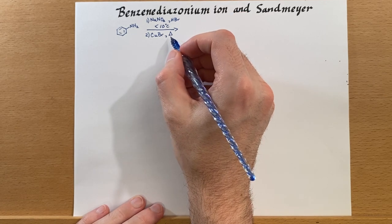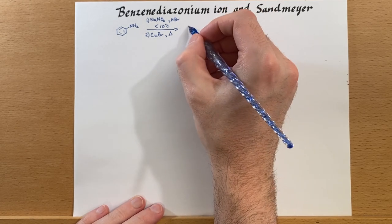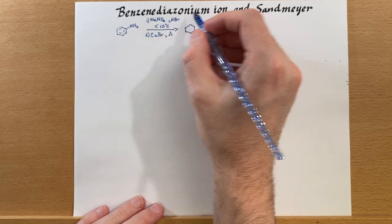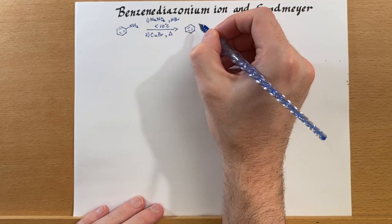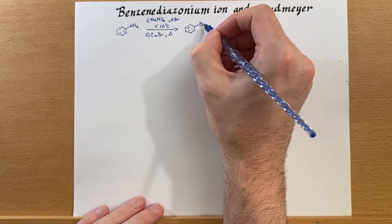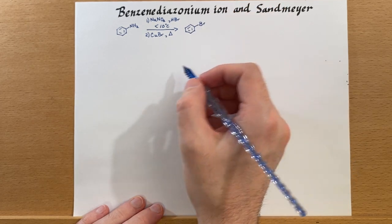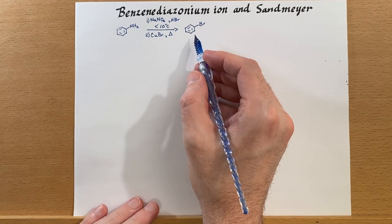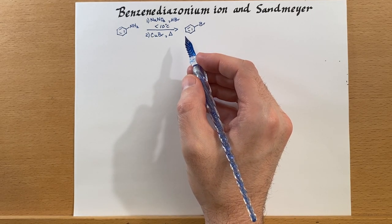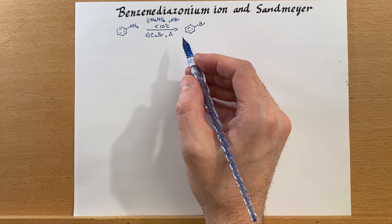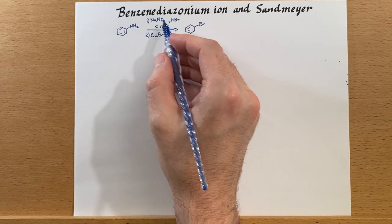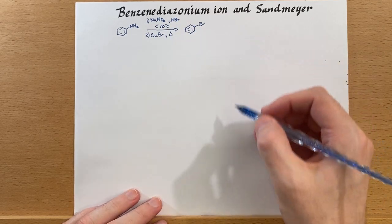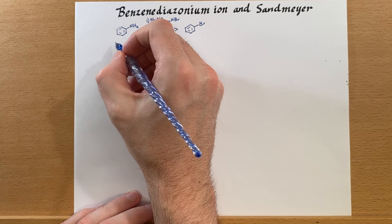This second step is actually the Sandmeyer reaction, and that's where we're using that benzene diazonium ion to do a reaction, in this case a bromination. So this is kind of what we're looking at. So let's look at that first process for generating this benzene diazonium ion.